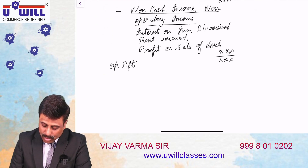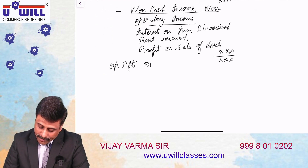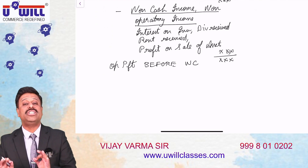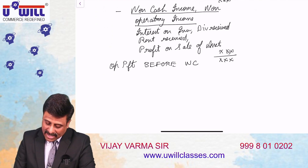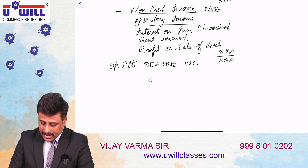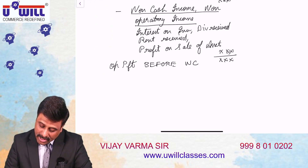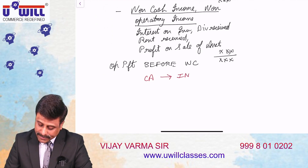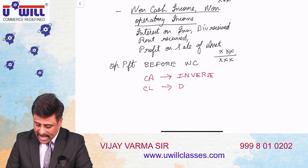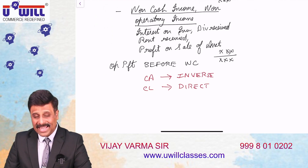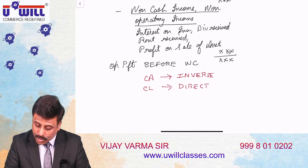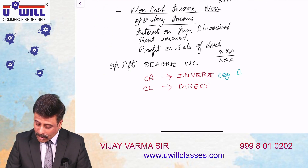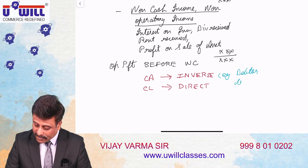After subtracting these, what you get is operating profit before changes in working capital. Now, for changes in working capital, remember this shortcut: current assets and cash have an inverse relation, while current liabilities and cash have a direct relation. To remember this, use the example of debtors for current assets and creditors for current liabilities.